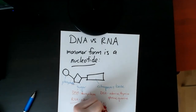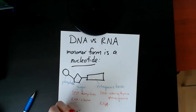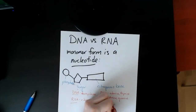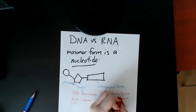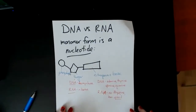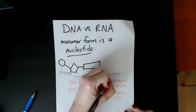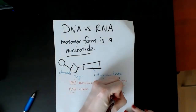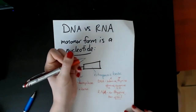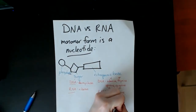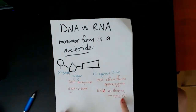In RNA, one of the bases is different — there's no thymine. Instead, it has something called uracil. You can abbreviate the bases with letters: A, T, C, and G for DNA, and uracil is abbreviated as U in RNA.